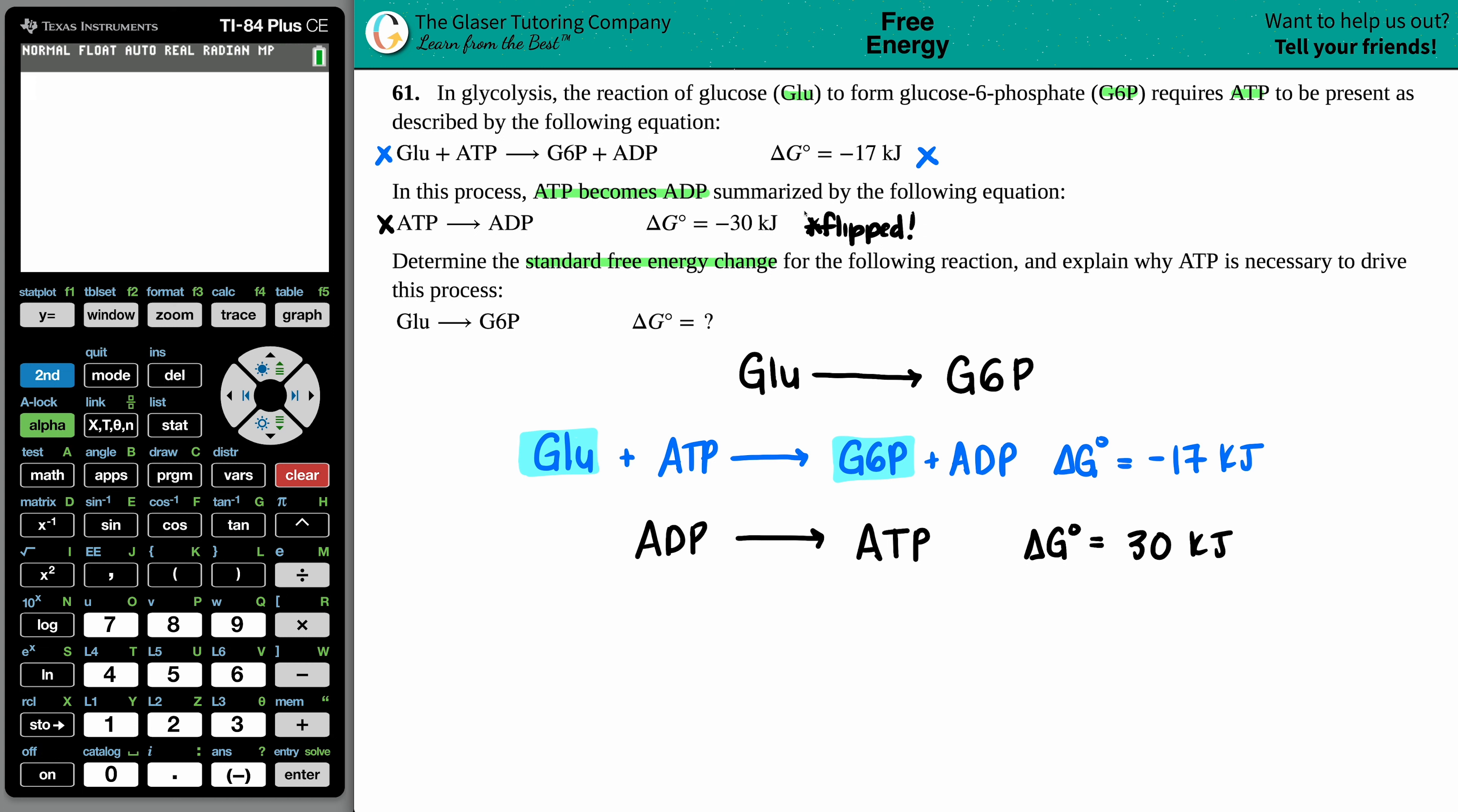I used this equation so I can't use it again, and now we're done. ATP will cancel out with ATP, ADP will cancel out with ADP, and you're left with the equation that you want: glucose yields glucose-6-phosphate.